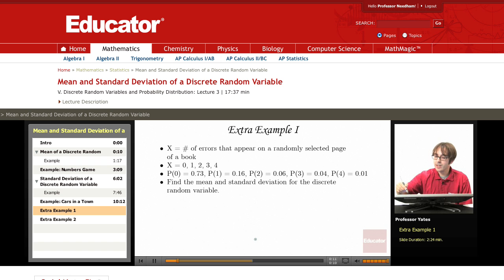So the first one that we're going to look at here is our random variable is going to be the number of errors that appear on a randomly selected page of a book. So we have our values of x and we have our probabilities. What we want to find is the mean and the standard deviation for the discrete random variable.